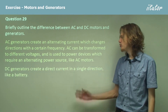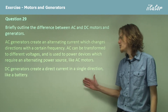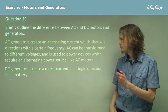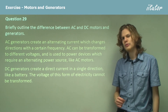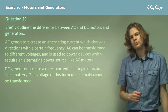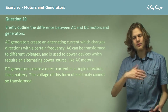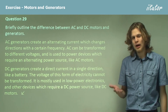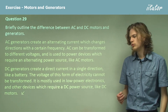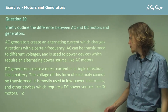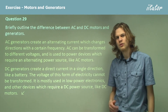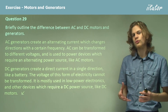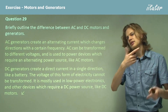On the other hand, DC generators will produce a direct current, meaning it flows in a single direction like a battery, although it might bounce up and down a bit. The voltage of this form of electricity cannot be transformed, because we need a current that's varying back and forth in order to apply a transformer to it. It's mostly used in low power devices and devices which need DC power sources, such as DC motors, which use a split ring commutator to ensure continuous spinning.